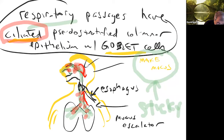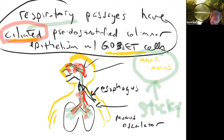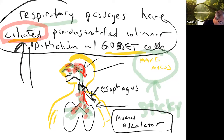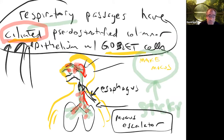The respiratory passages also help humidify and warm the air to make sure the delicate lung tissue isn't stressed by dry, cold air. The mucus escalator tends to get paralyzed by smoking — the cilia don't work as well, so smokers have to more manually clear that mucus rather than allowing the cilia to sweep it up automatically. So now let's talk about pulmonary ventilation — how you actually get the air in and out of your lungs.